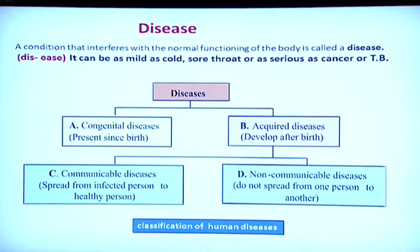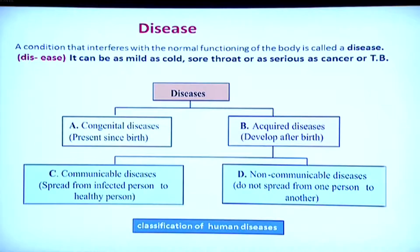Acquired diseases can be communicable or non-communicable. Communicable diseases are those which can spread from one infected person to another — this includes TB, AIDS, leprosy, etc. Non-communicable diseases, on the other hand, do not spread from an infected person to a healthy person; there are other reasons for them.